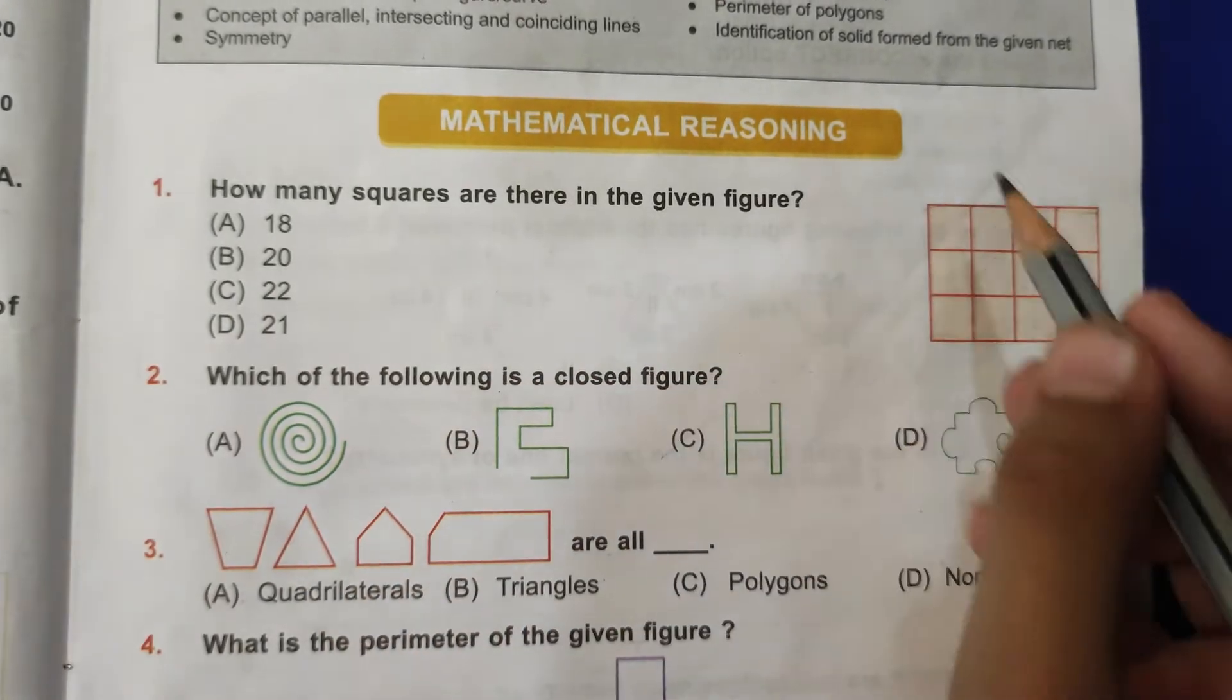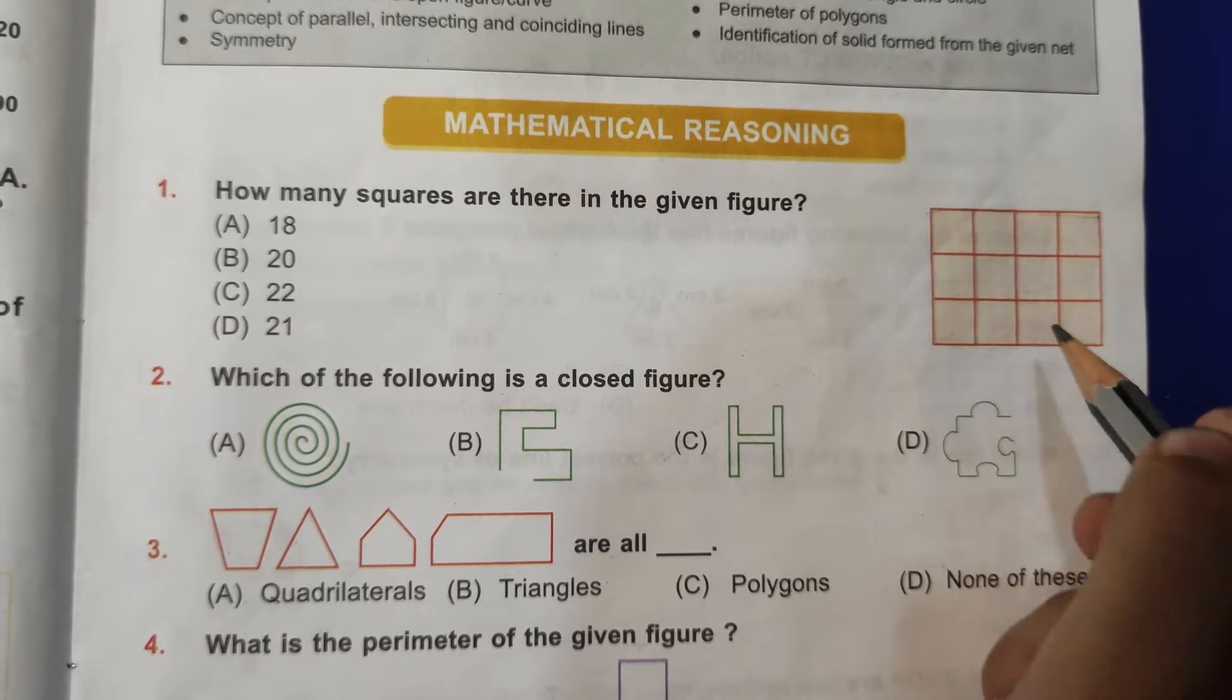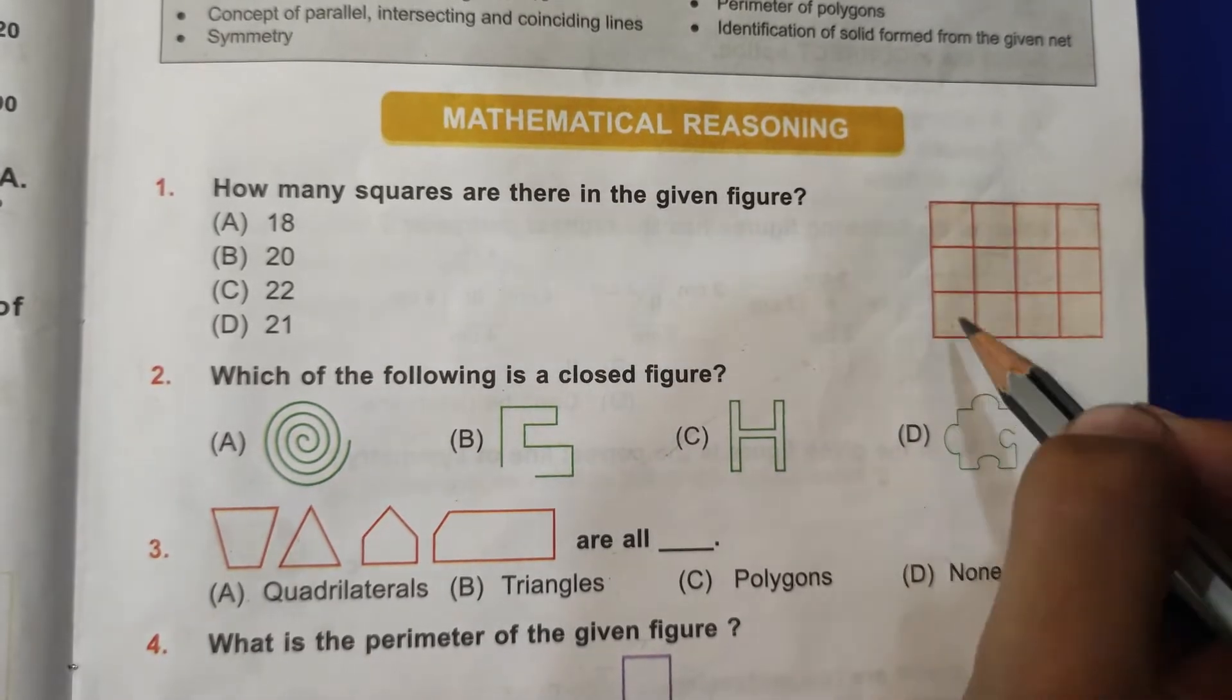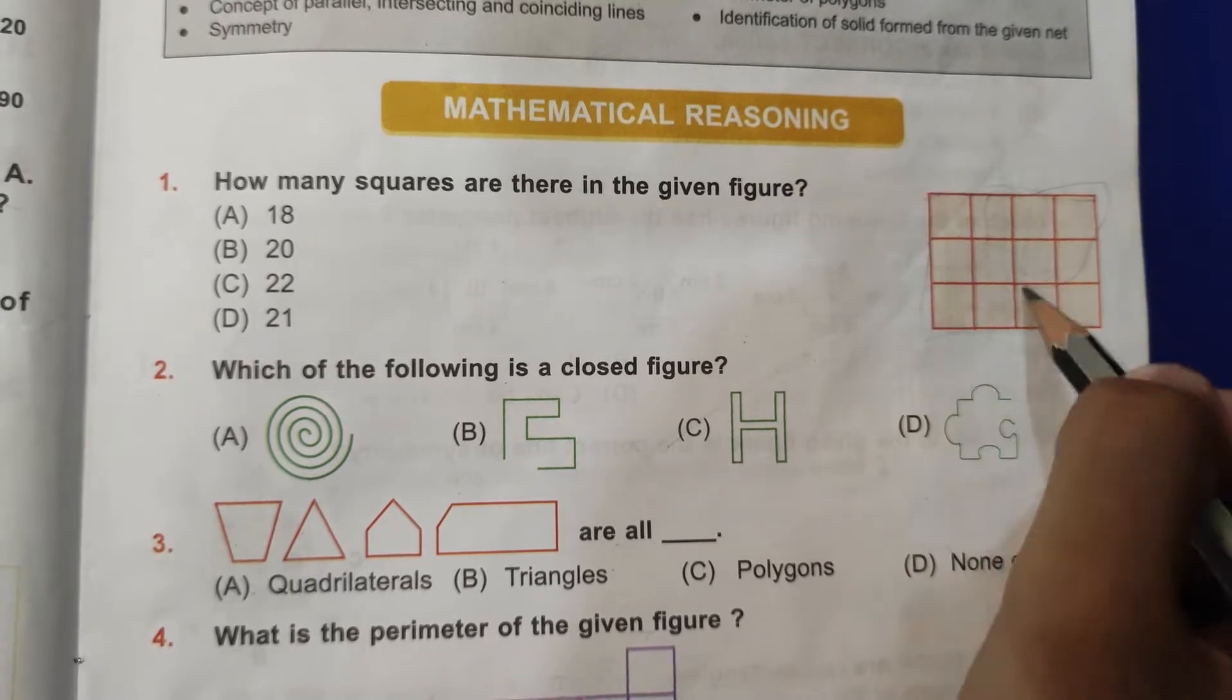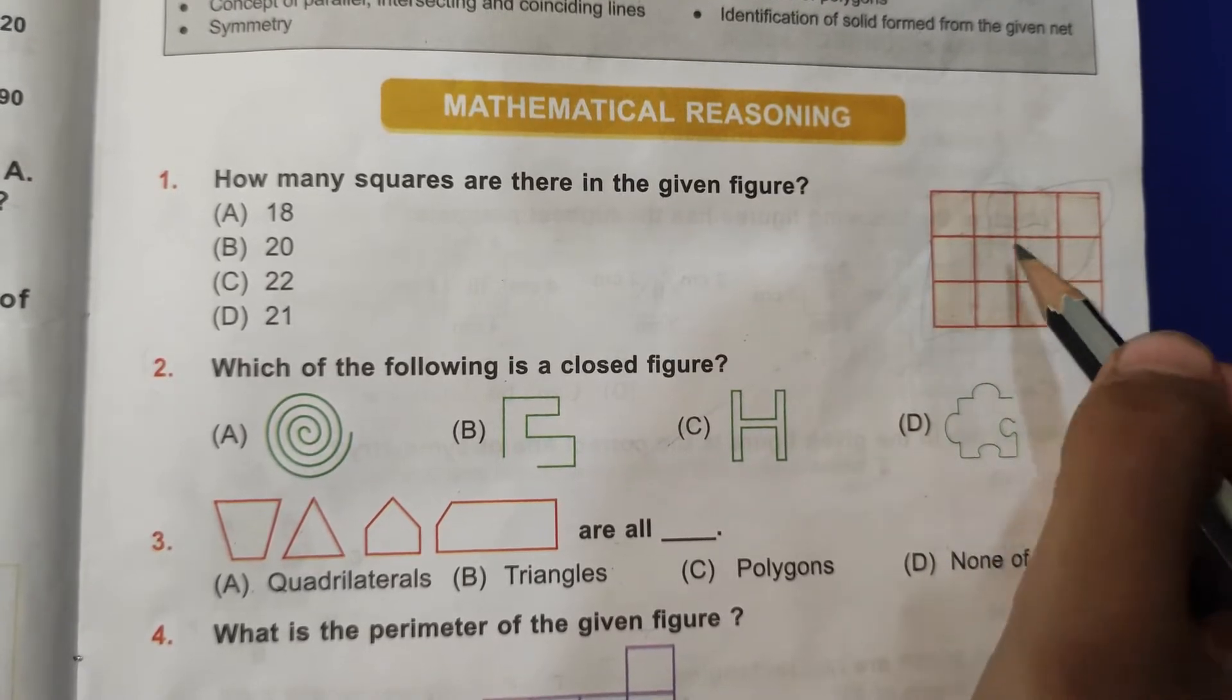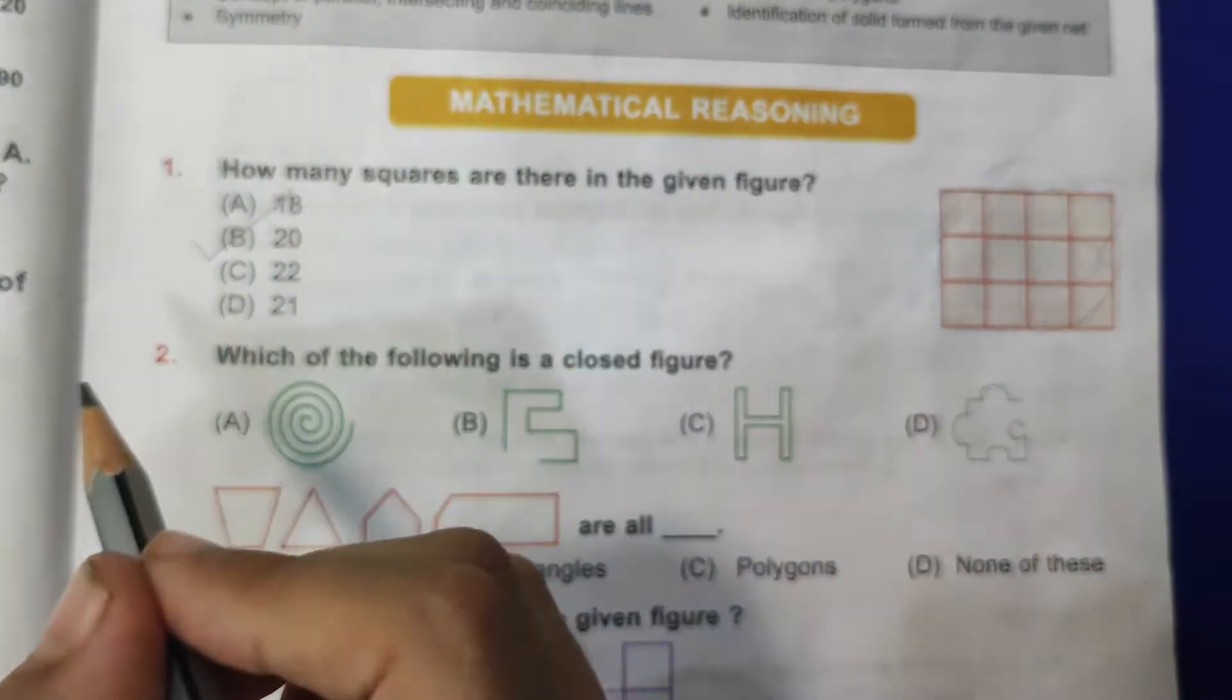First question: how many squares are there in the given figure? So 1, 2, 3, 4, 5, 6, 7, 8, 9, 10, 11, 12, 13, 14, 15, then here 16, 17, 18, and then 19 and 20. So B, 20 is the correct answer.